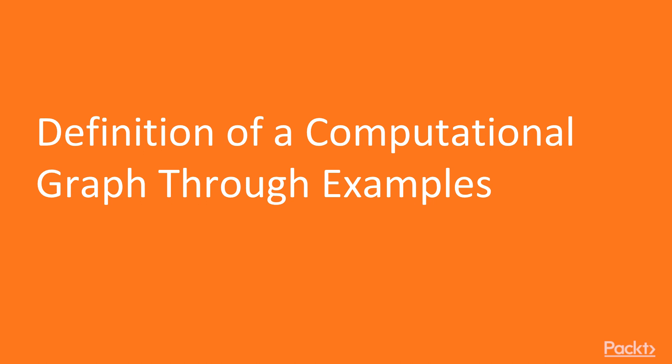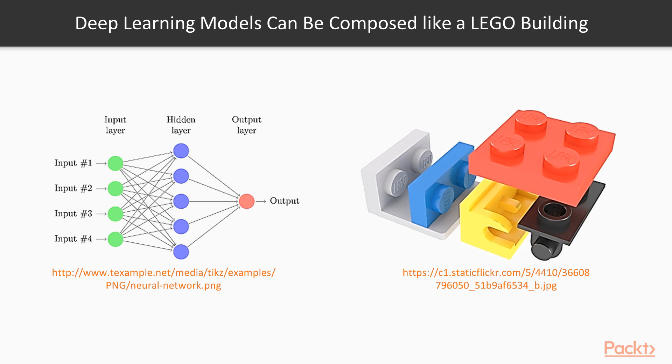In this video, we will define the computational graph through example. Deep learning models can be composed like a Lego building. If you look at the left images, it is three layers of neural networks. It looks like you just stuck three layers together.